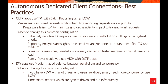When to change the common configuration: extremely time-sensitive transactions can run with TP Urgent for highest priority. Reporting and analytics that are slightly time-sensitive can use Medium, which provides more parallelism for faster query return with marginal impact on heavy transaction workloads. You would rarely use High with OLTP applications. For data warehouse applications, Medium provides a better balance between parallelism and concurrency. If a data warehouse has many real end users needing more concurrency, use Low.